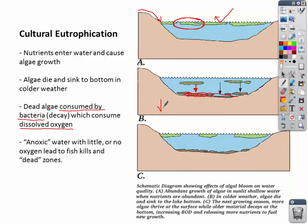A decrease in dissolved oxygen — what needs dissolved oxygen in water to live? Anything! Any aquatic animal, any fish needs dissolved oxygen. If you take away the dissolved oxygen, you have anoxic water, which leads to dead zones. And that's cultural eutrophication.